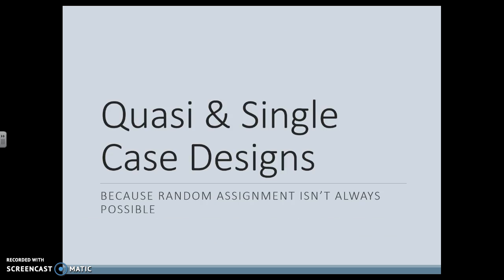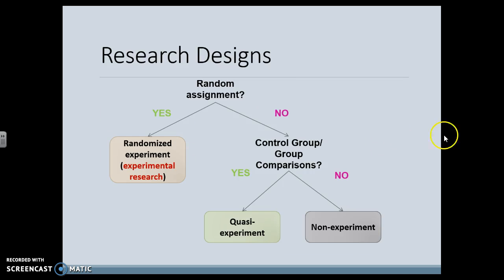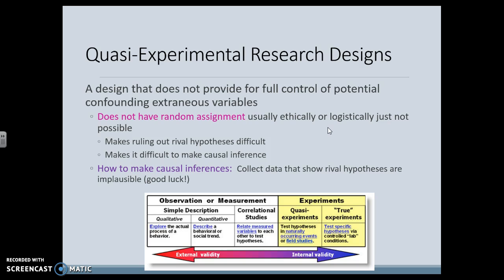Quasi and single-case designs — not a case study, a single-case design — happen when you can't do random assignment. It's not always possible. We still have control groups and some comparisons happening, but no random assignment. If you want to make cause-and-effect statements, it's incredibly hard. You have to rule out rival hypotheses, and making those inferences is not as strong as true experiments, so we're moving a bit away from internal validity here.